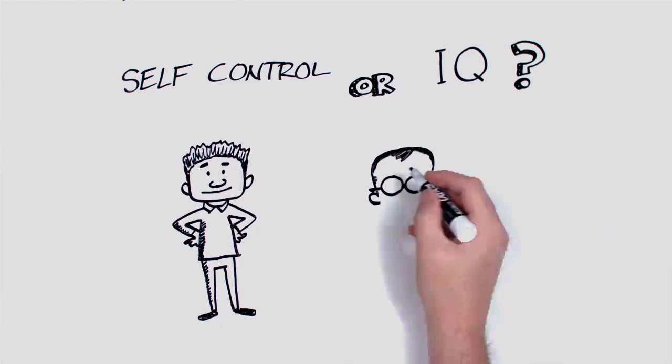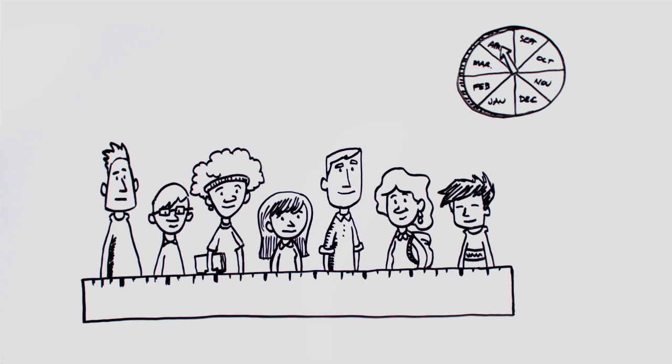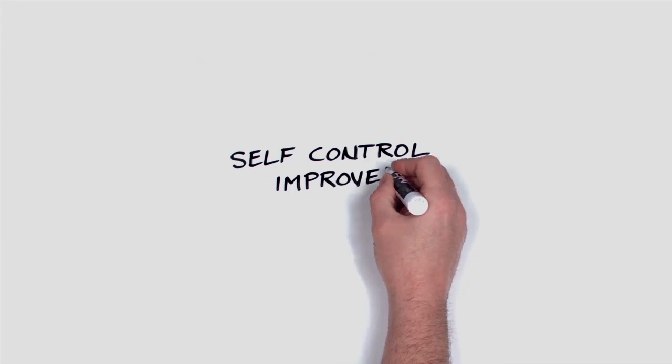To illustrate, one study wanted to see which was more important in predicting success in school: self-control or intelligence. They measured self-control and intelligence at the beginning of the year, and then waited patiently to see how well the students did in their classes at the end of the year. The result? Self-control was twice as important as intelligence in predicting academic success.